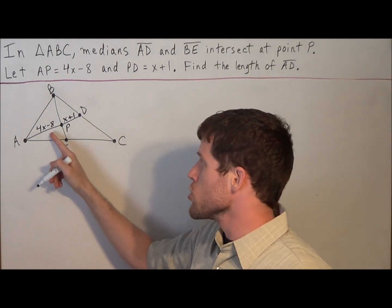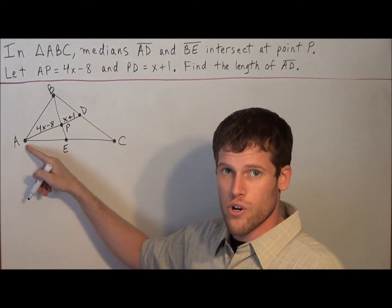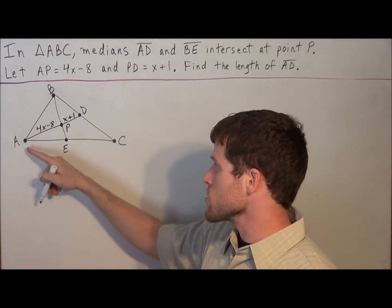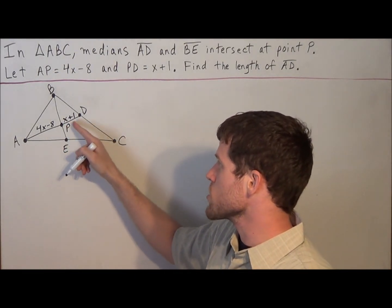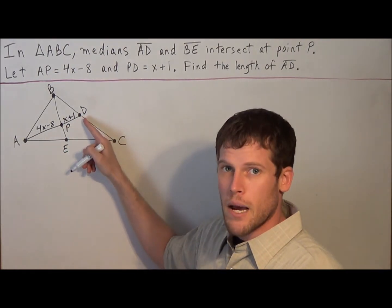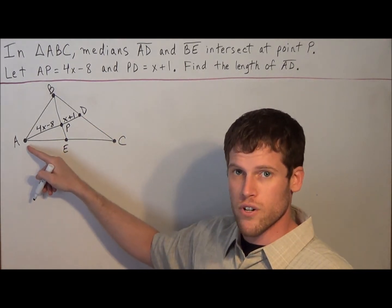And to identify, the long piece is going to use the vertex, the corner, as one of its sides. It goes to the centroid. The short piece goes from the centroid to the midpoint of the opposite side. So remember, the long piece goes to the corner or the vertex.